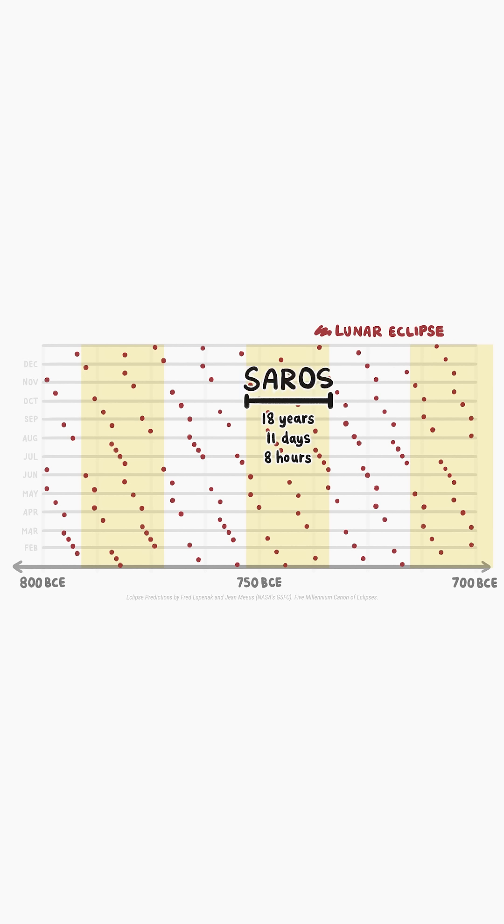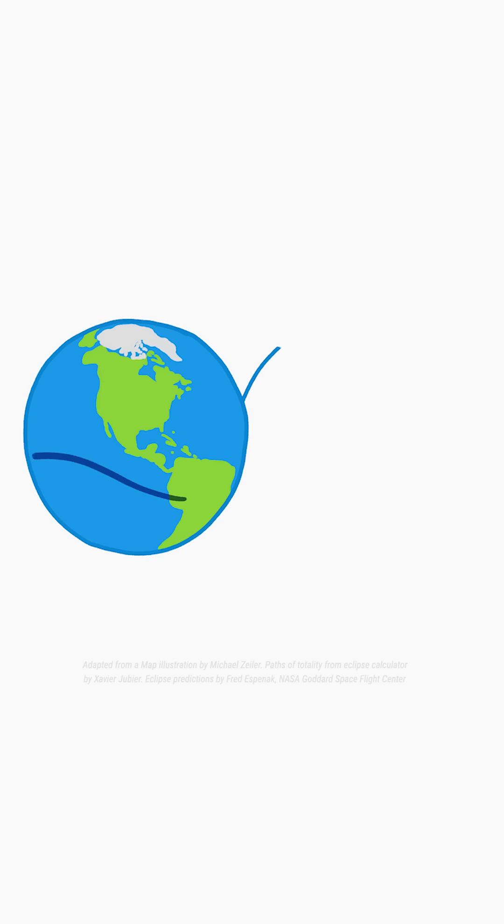And it turns out that the Saros also applies to solar eclipses. If a solar eclipse happens here, another one with a similar path will be visible 18 years, 11 days, and 8 hours later.